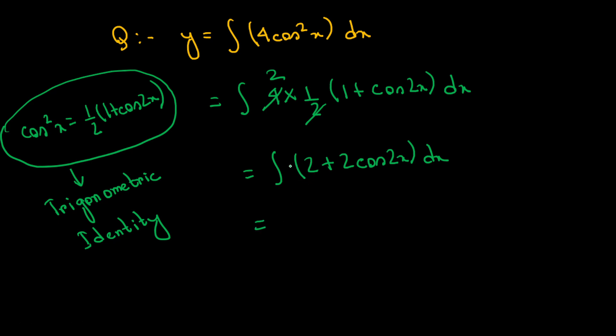Integration of 2dx plus 2cos2x. Integrating gives 2x plus 2sin2x divided by the x coefficient, which is 2.